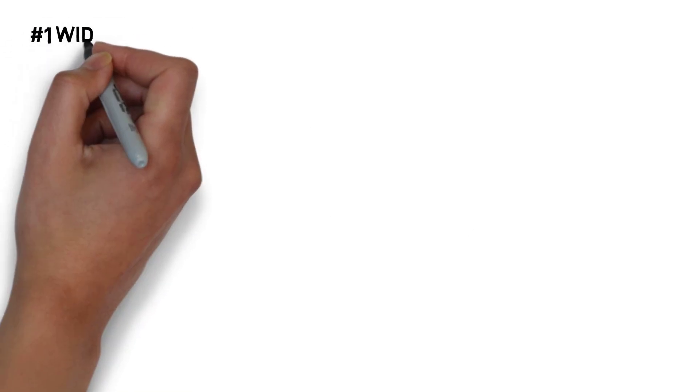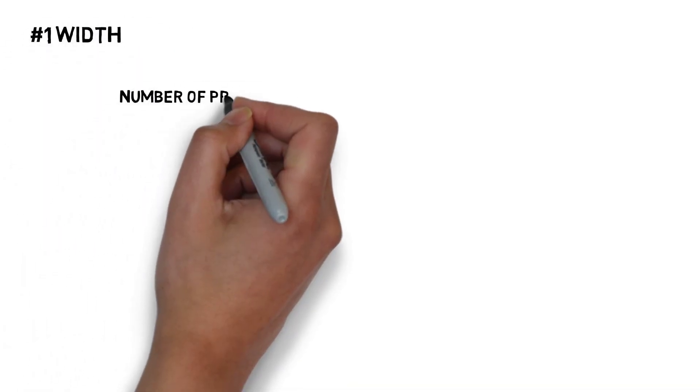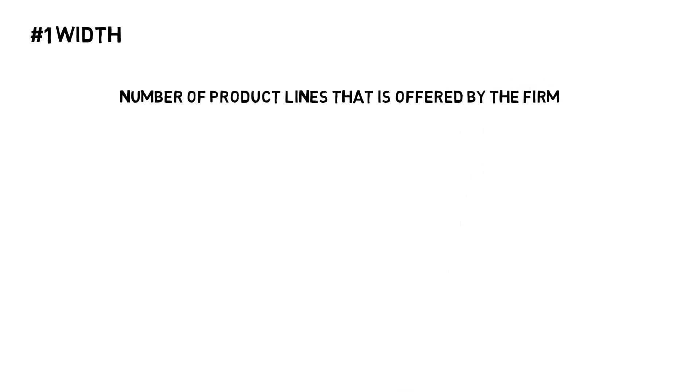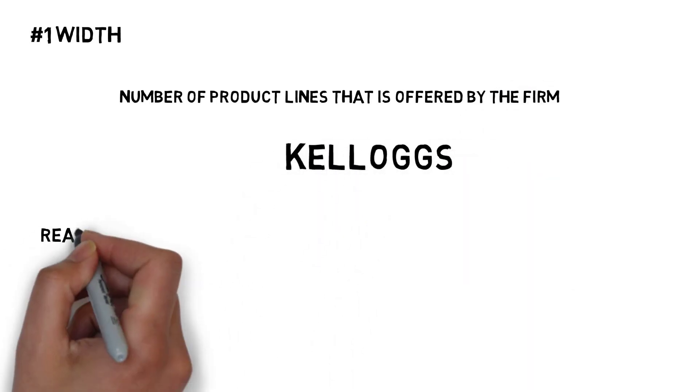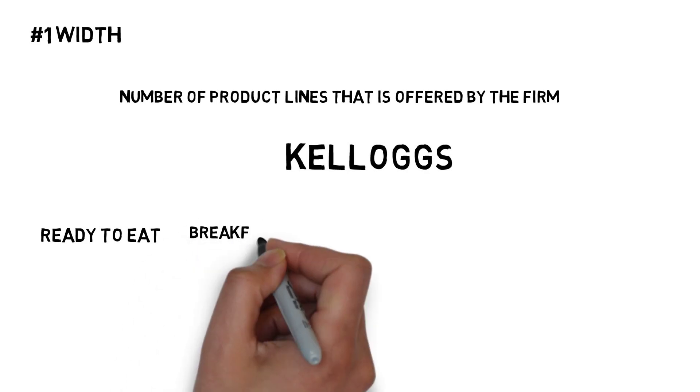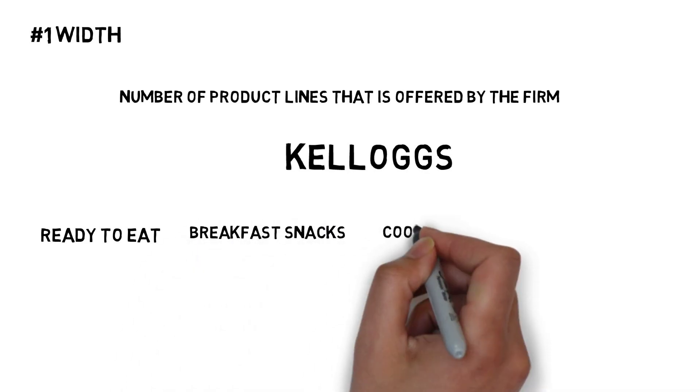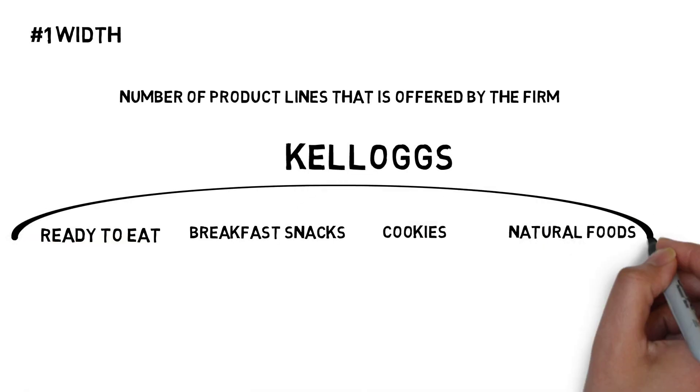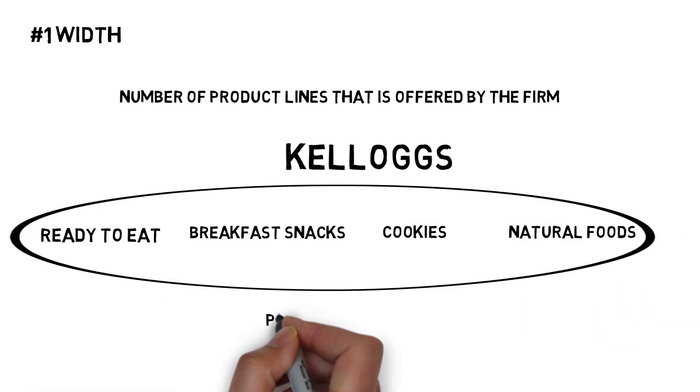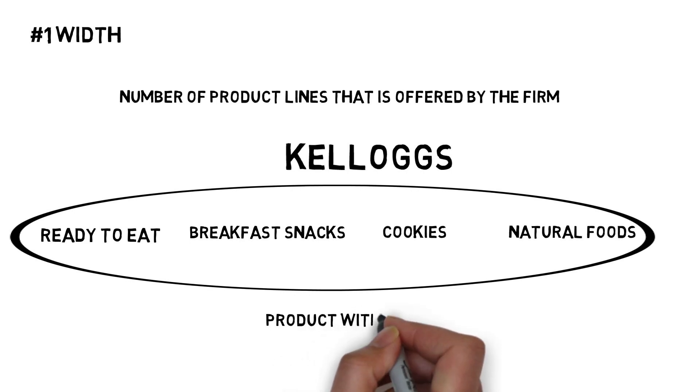In product mix, first one is width. Width refers to the number of product lines that is offered by the firm. For example, Kellogg's product lines consist of ready-to-eat cereal, pastries and breakfast snacks, crackers and cookies, frozen or organic or natural goods. Here, in this example, the product width of Kellogg's is 4.